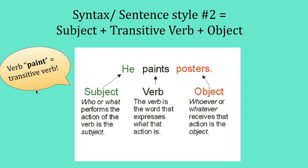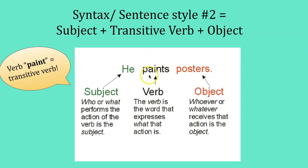Here is an example of a sentence that is using a transitive verb. 'He' is the subject of the sentence. 'Paints' is an action verb and this verb is a transitive verb. We know that it's transitive because after 'paint' we see a direct object. 'Posters' is receiving the action of painting, so 'paint' is a transitive verb because we use a noun after — we need a direct object.